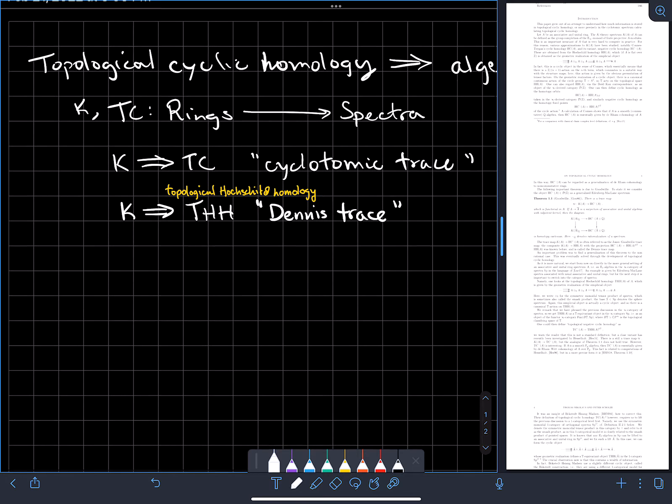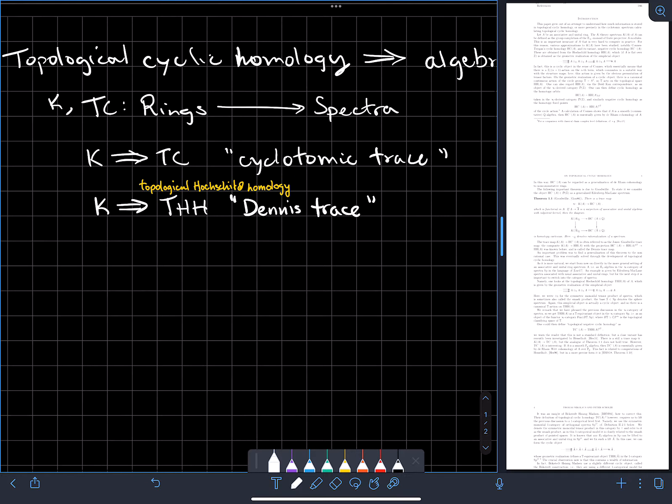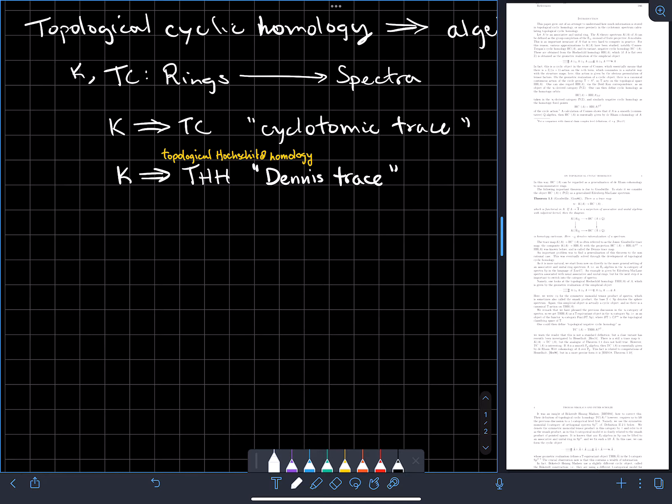Since this is a natural transformation of functors to the category of spectra, this is a fairly complicated thing. But on pi zero, this can naively be thought of as actually taking the trace of a certain matrix. The cyclotomic trace is a refinement of the Dennis trace, a factorization of the Dennis trace through a specific map from TC to THH.